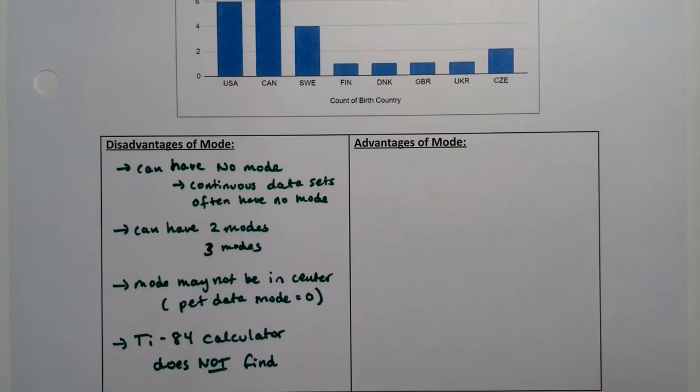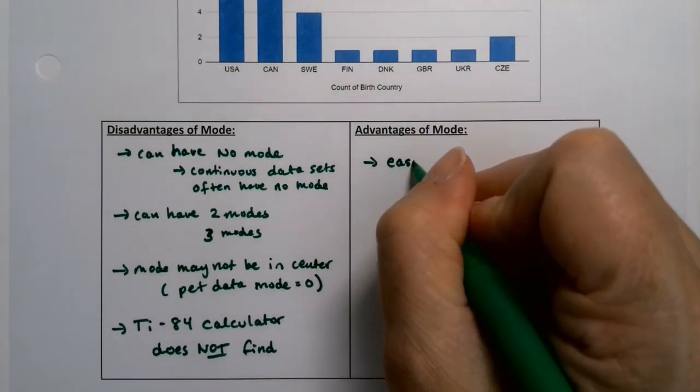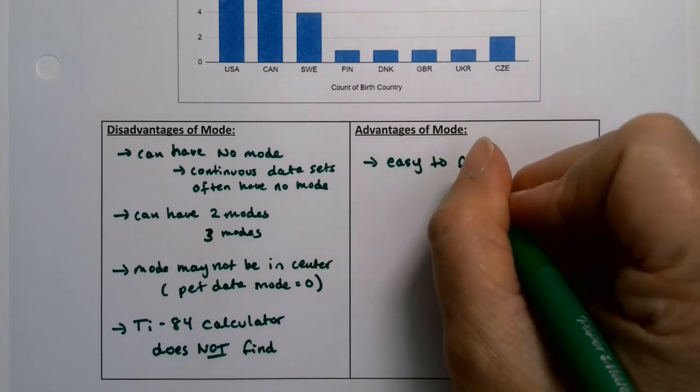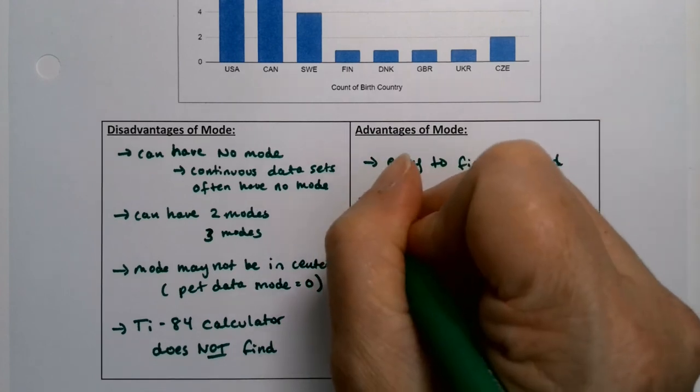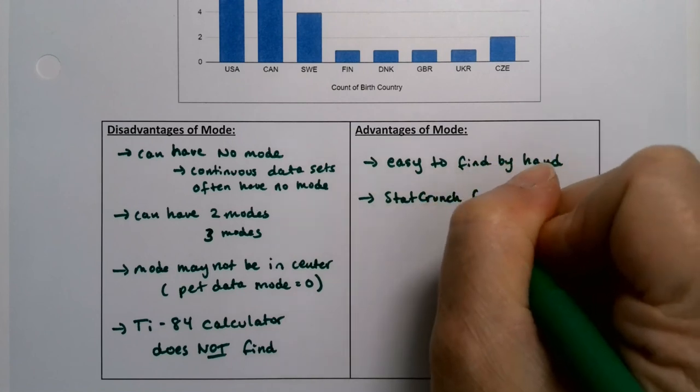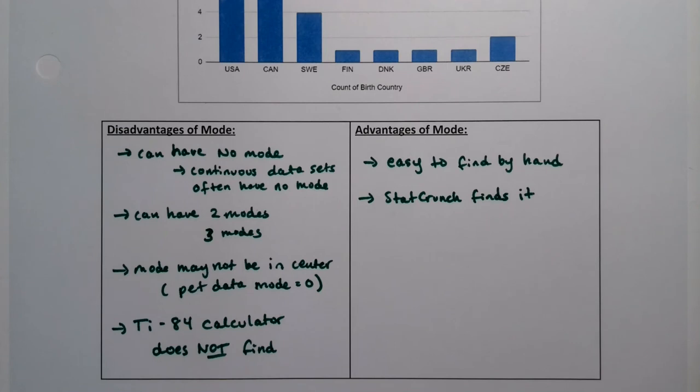Now that said, that's one of the advantages of mode. It's actually pretty easy to find by hand, especially if it's in a bar chart like this. StatCrunch will find it. When you find your statistics for a column, StatCrunch will find it.